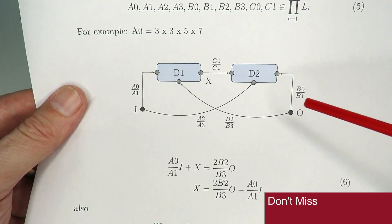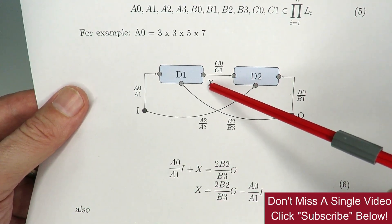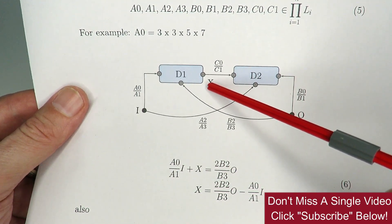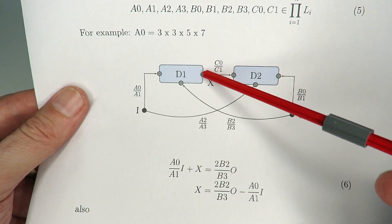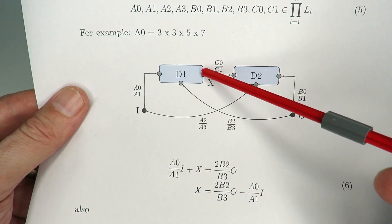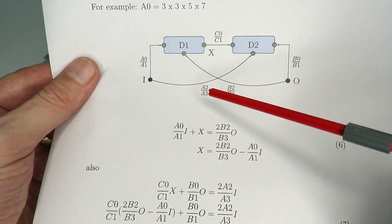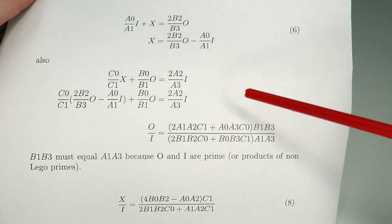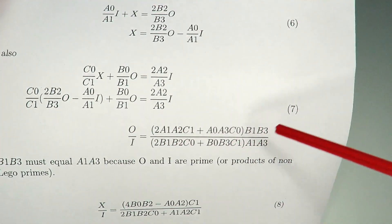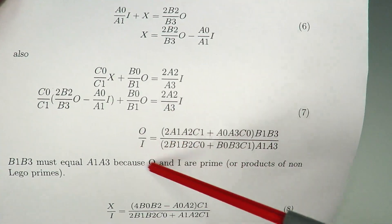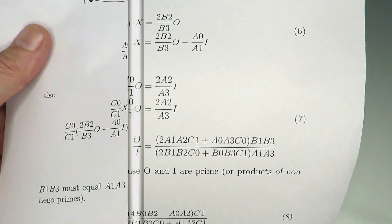But it can be done. It comes down to introducing an intermediate node called X on this axle here. Going through the math — I won't show all the details — the output over input is determined by a large equation.